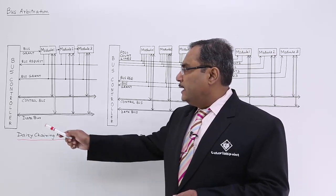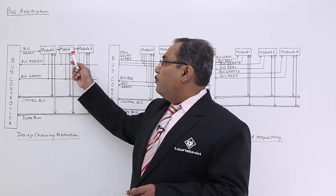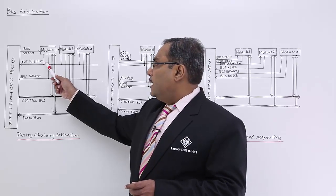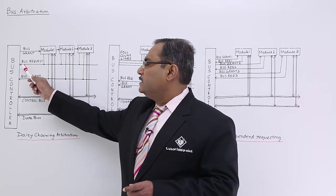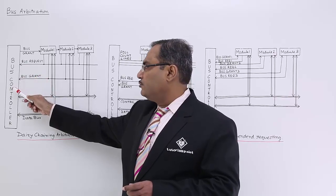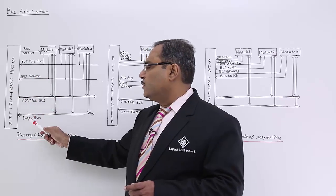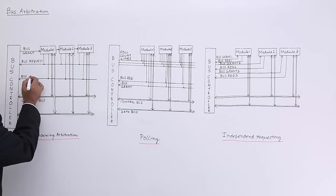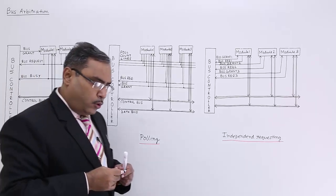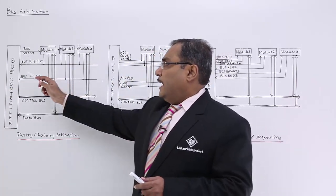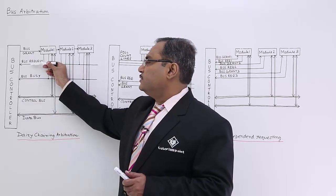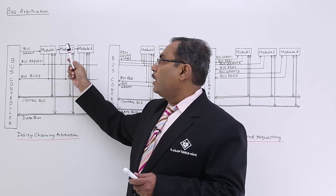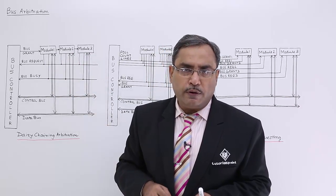In case of daisy chaining, just look at the diagram. This is the bus controller and these are the competing modules. This line is a control line known as the bus grant line, and these are the bus request lines coming from individual modules. The bus request line is available as an input line to the bus controller. The bus controller will check whether this bus request line is enabled — it will be enabled if and only if at least one of the modules is requesting access to the bus.